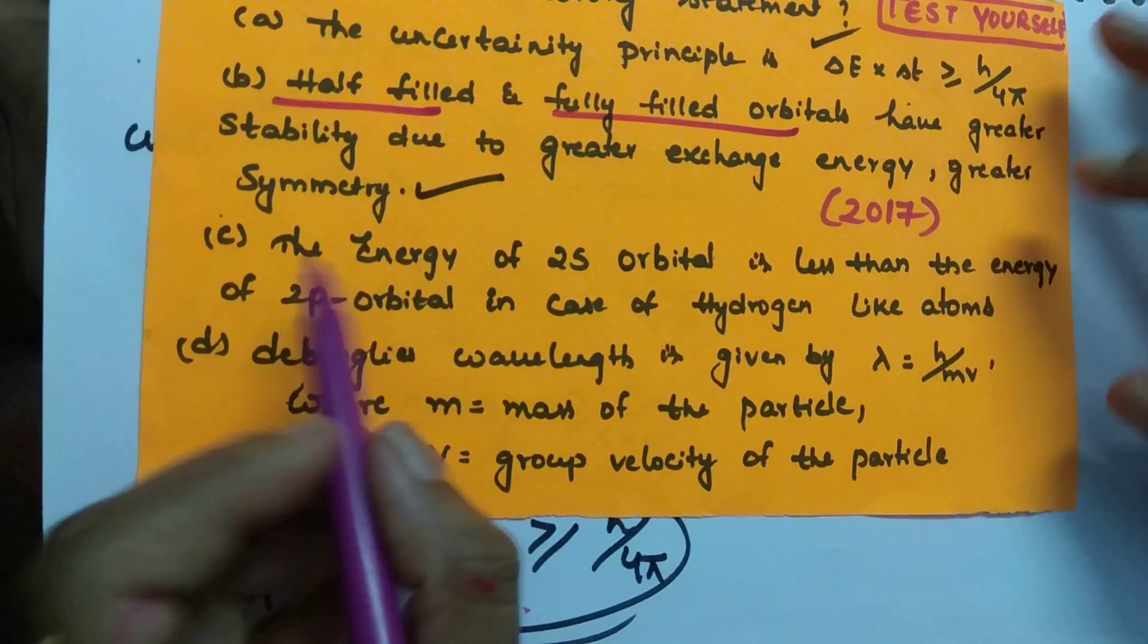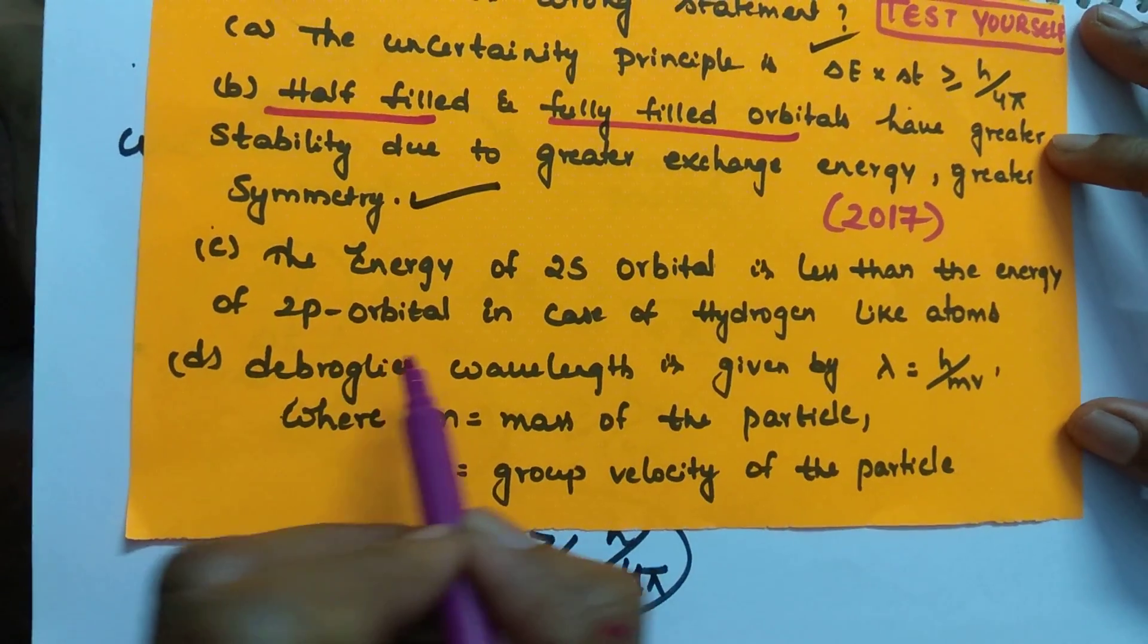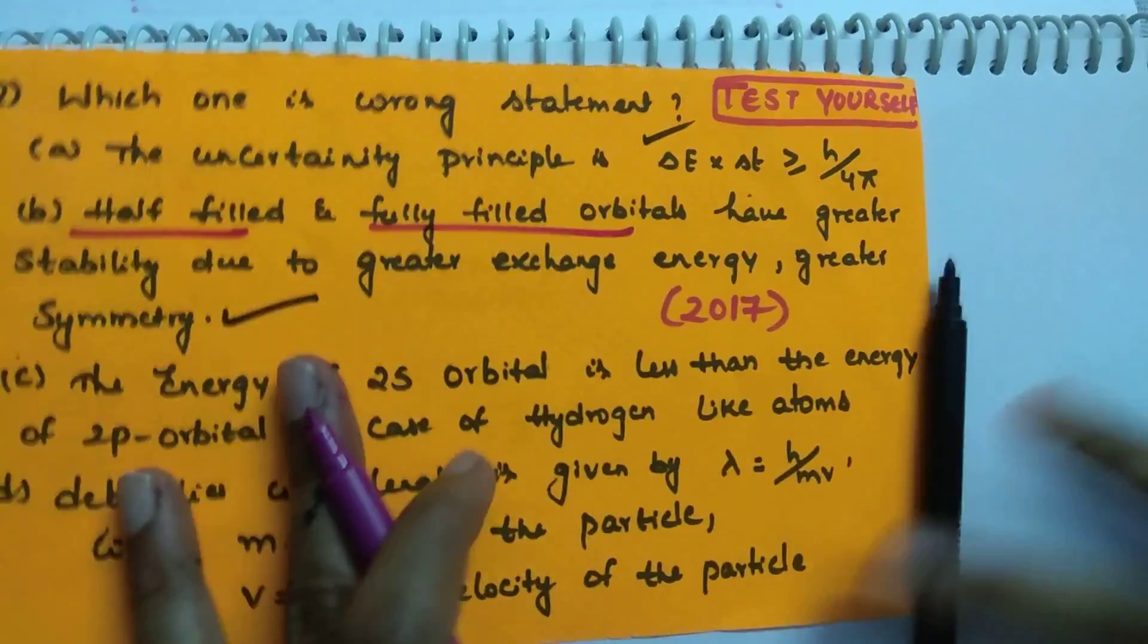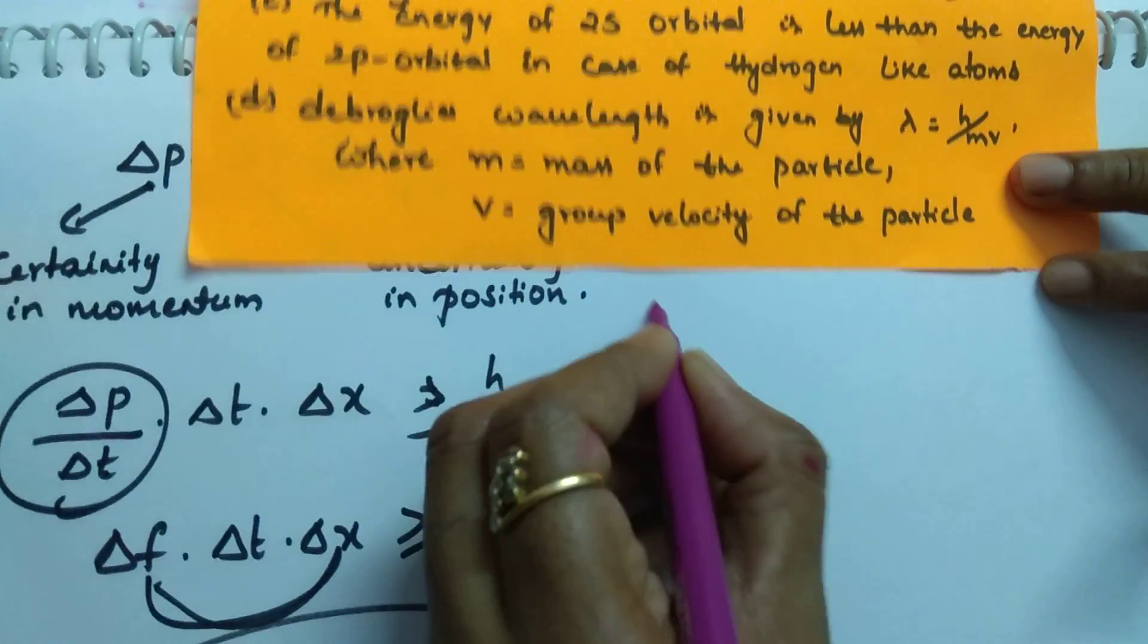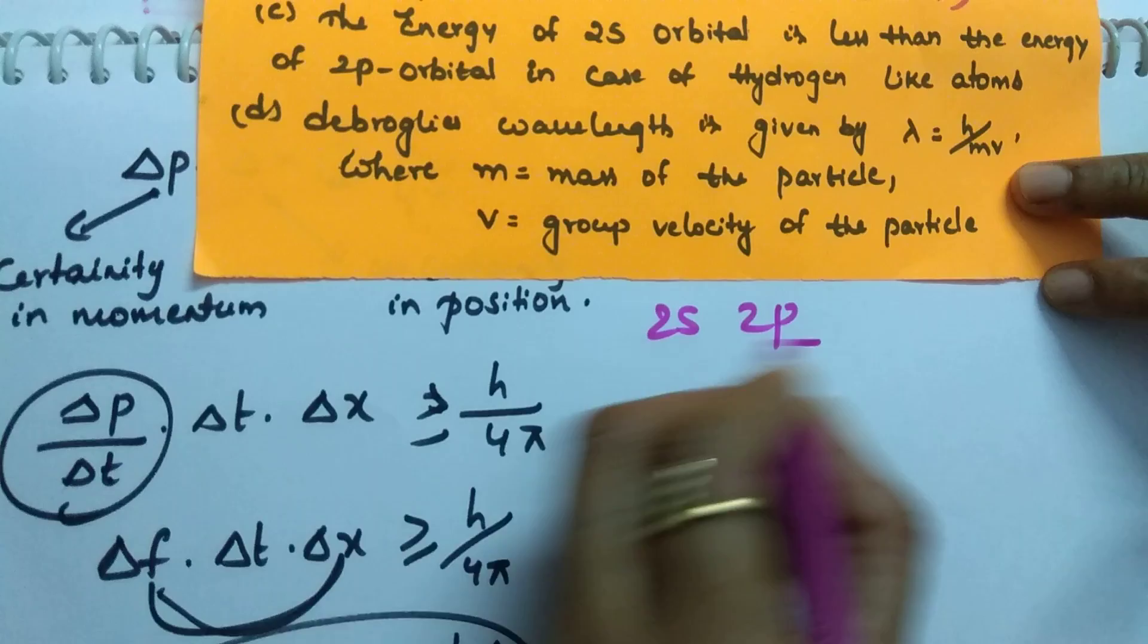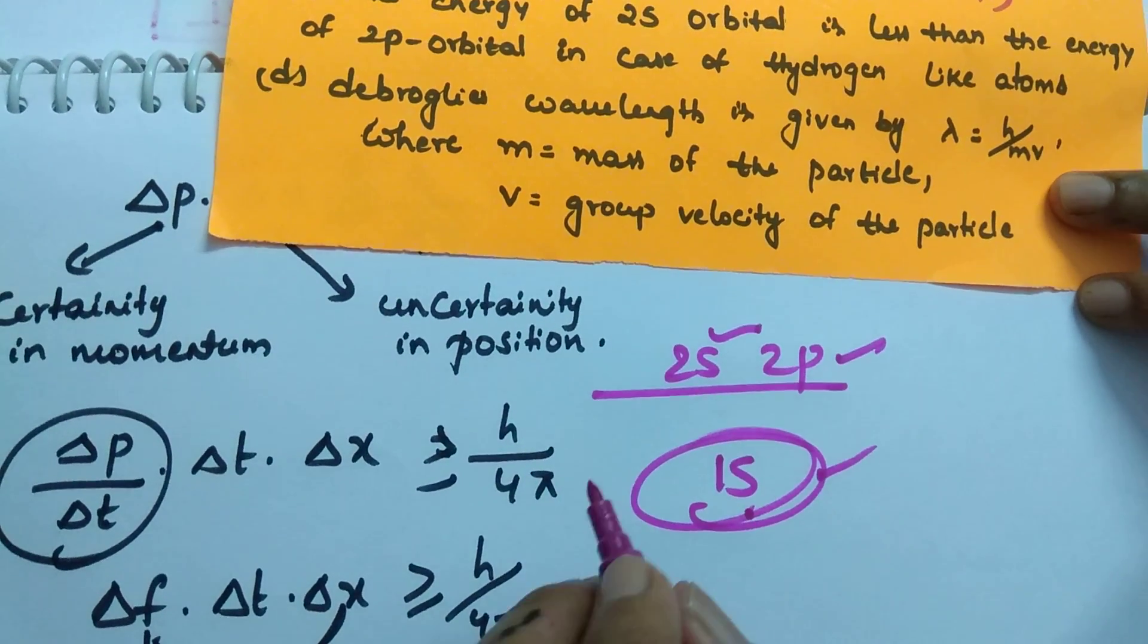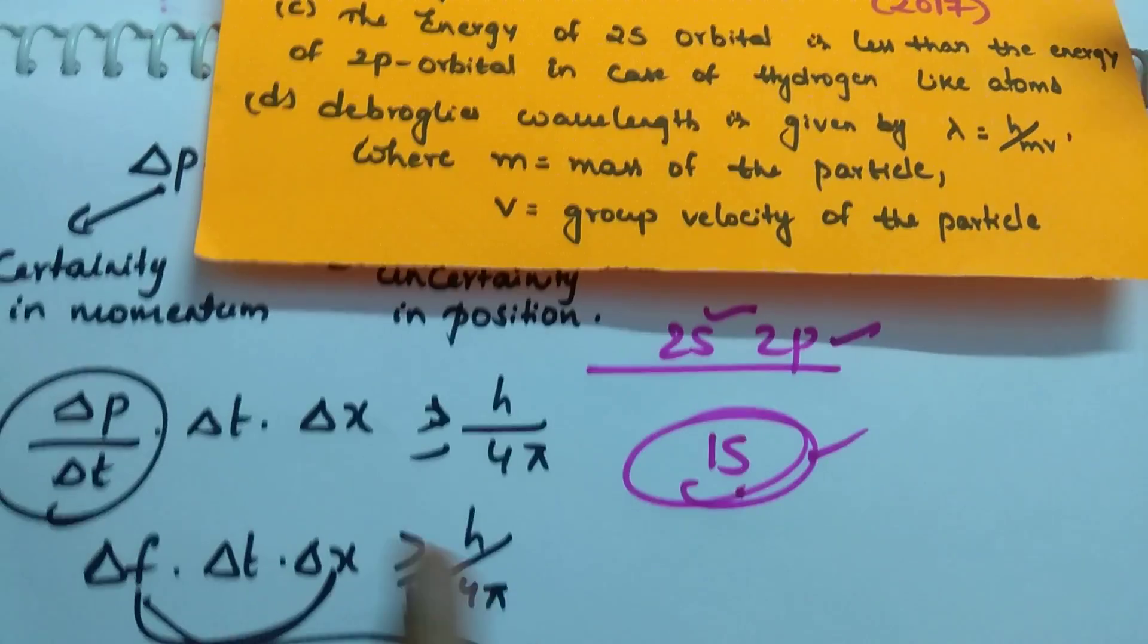Next one. The energy of 2S orbital is less than energy of 2P. Correct. But, not in case of hydrogen. Because, in hydrogen, the ground state is 1s. And, 2S and 2P are excited states. When only ground state is there 1s, remaining are excited states, then both are having same energy. But,